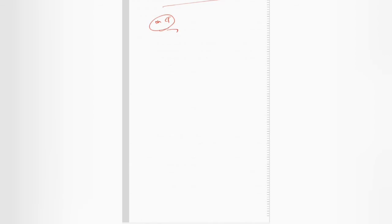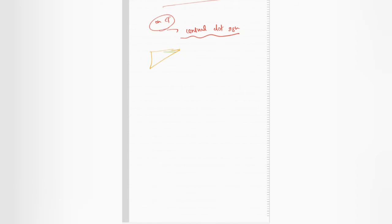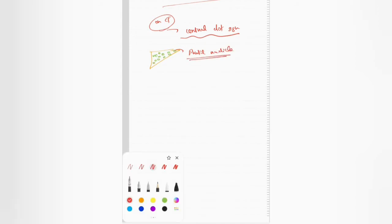The second point is that on CT, basically due to portal radical dilatation, you will get a sign called the central dot sign. If you consider this is your liver and there is multiple intrahepatic biliary dilatation, the dot in the center represents your portal radical, which is called the central dot sign on CT.